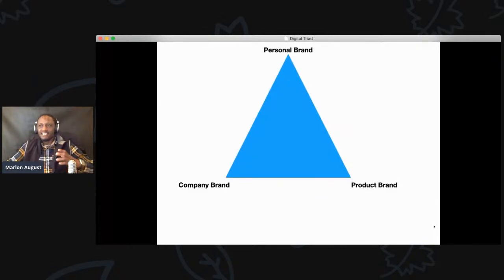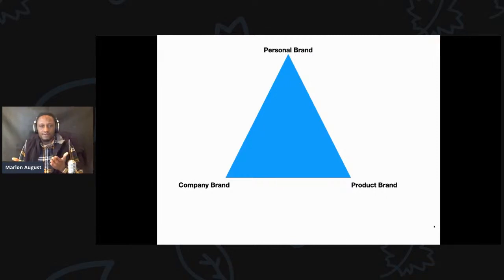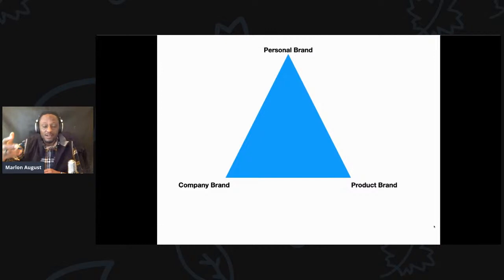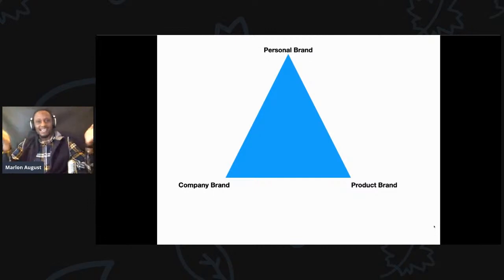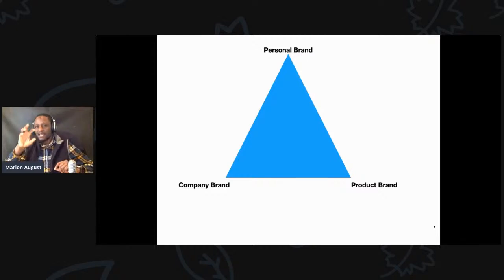Think of it like a surfer going out on a board — what you want to do is be able to surf the waves of change in your business. What is your surfboard? This is what I'm suggesting you do. It really comes down to being able to build three things: your personal brand, your product brand, and your company brand. I want to take a couple of seconds to explain each one.